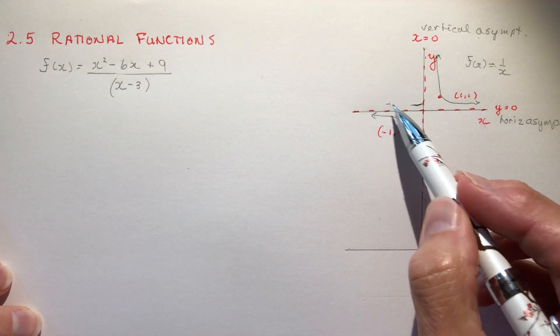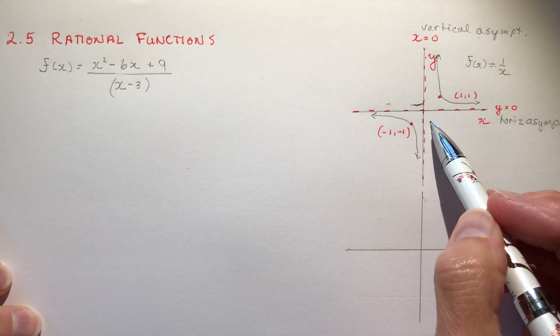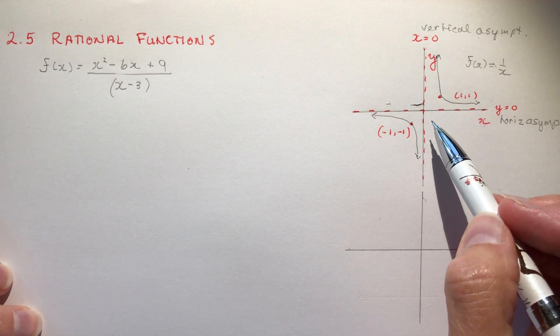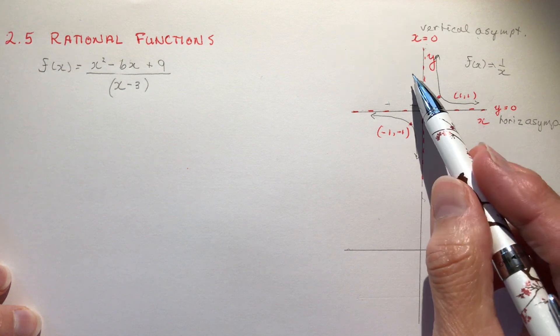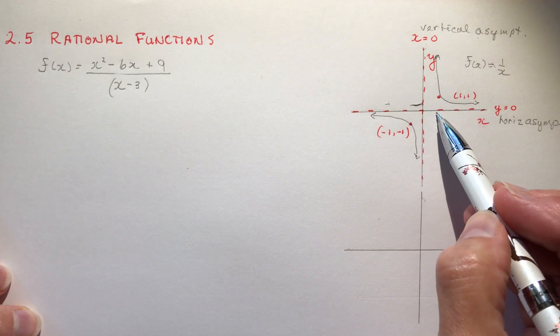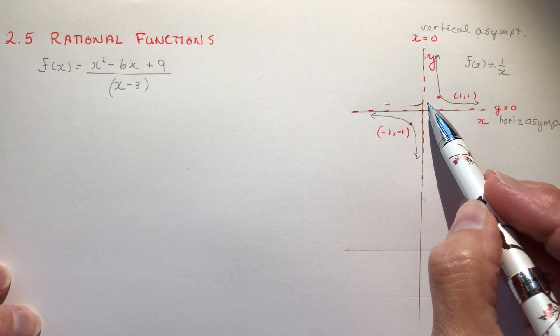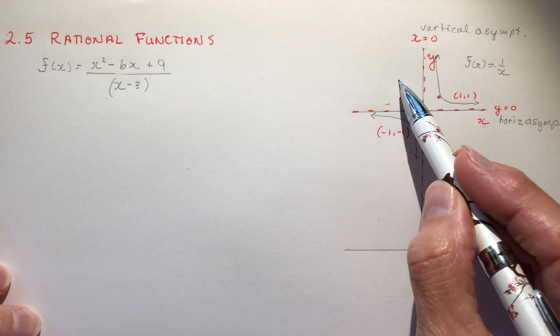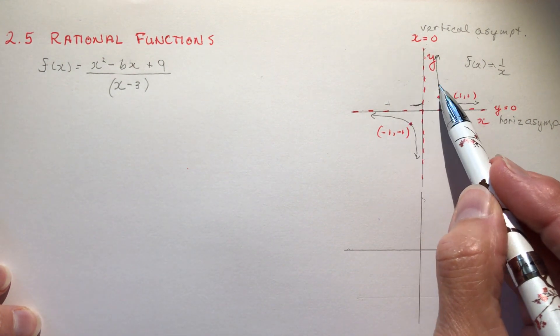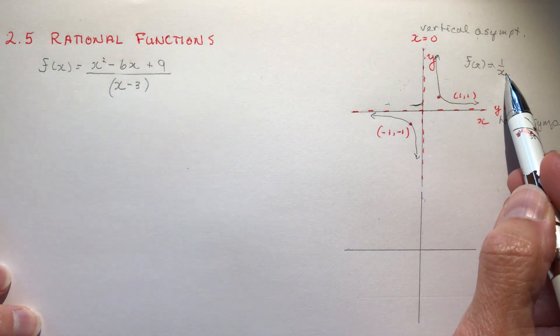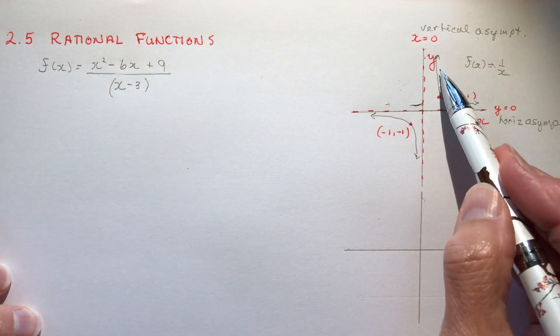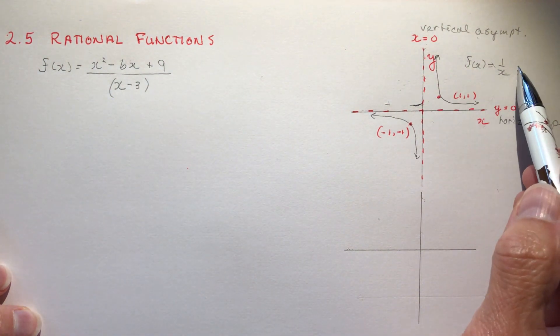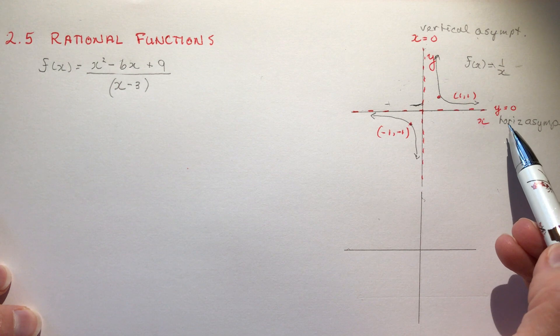Remembering from transformations that these asymptotes will shift depending on whether or not you're translating your x's left or right or the y's up or down. If we're translating up, this axis would move up. If we were translating left or right, this one would move left or right, and that would be seen in the denominator. The horizontal or the vertical shift up and down would be out here somewhere like a plus three or something.